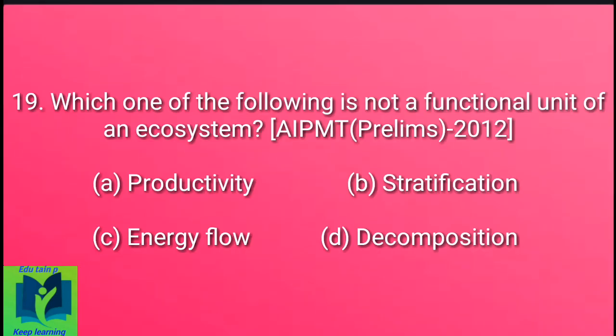Which one of the following is not a functional unit of an ecosystem? Option A: Productivity. Option B: Stratification. Option C: Energy flow. Option D: Decomposition.